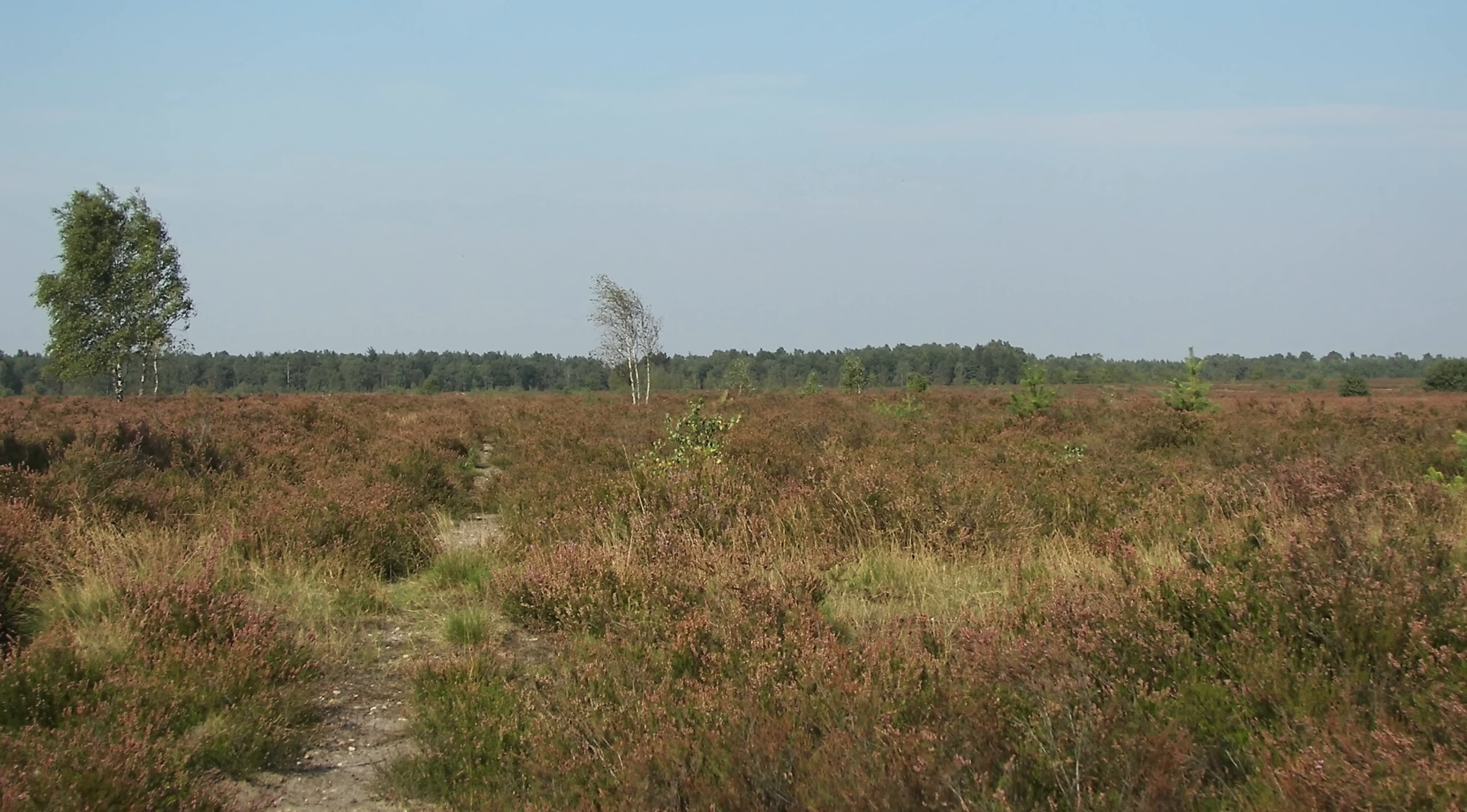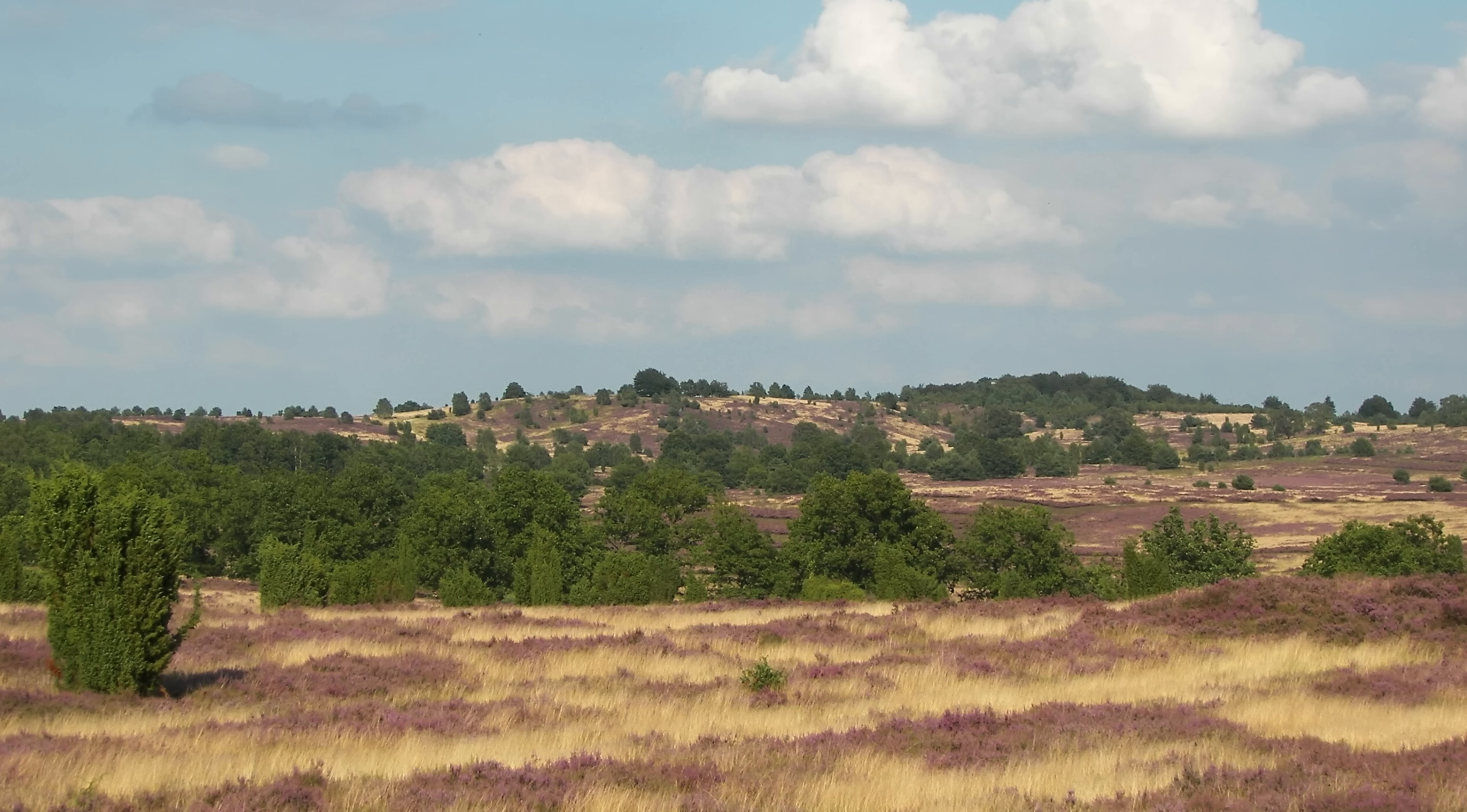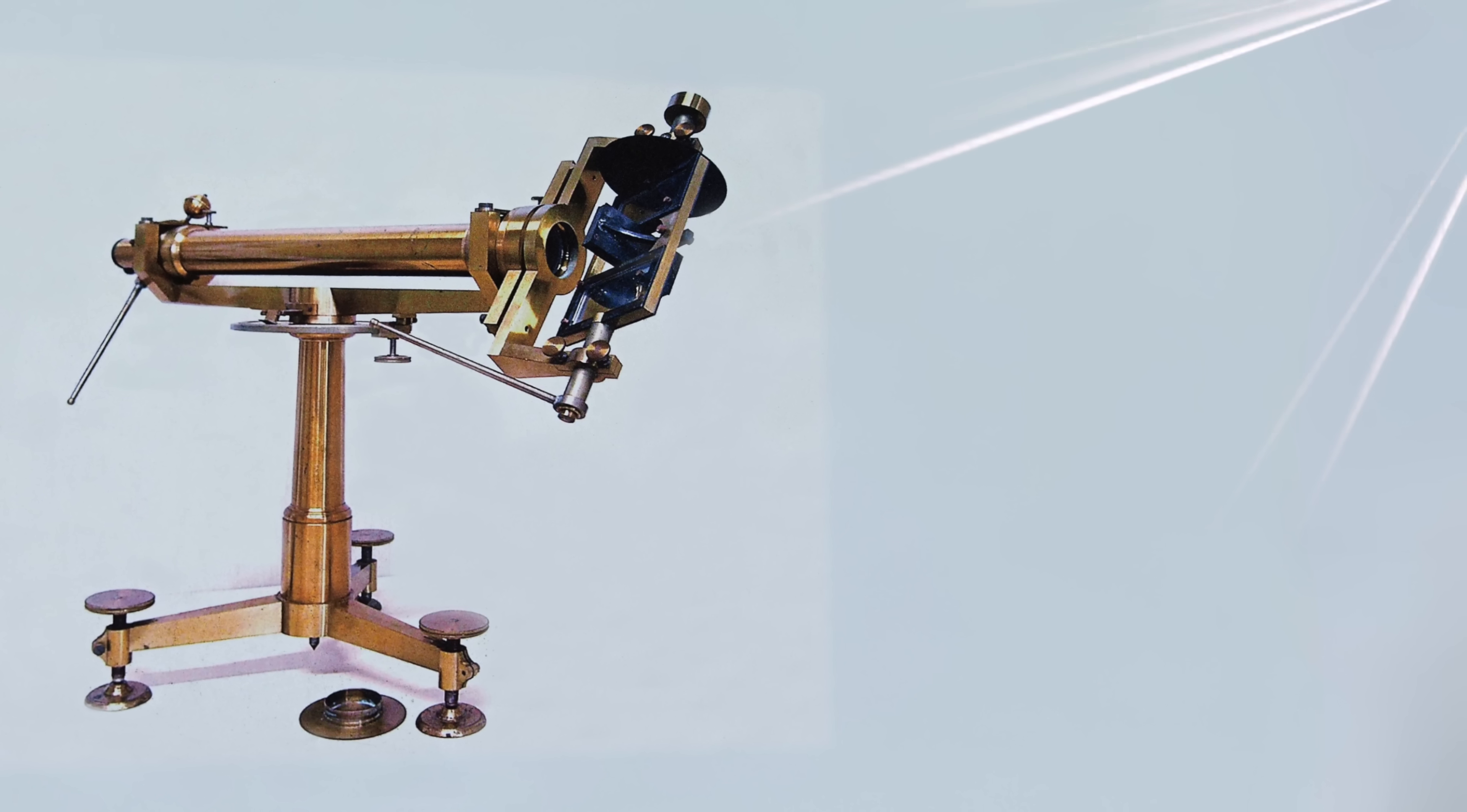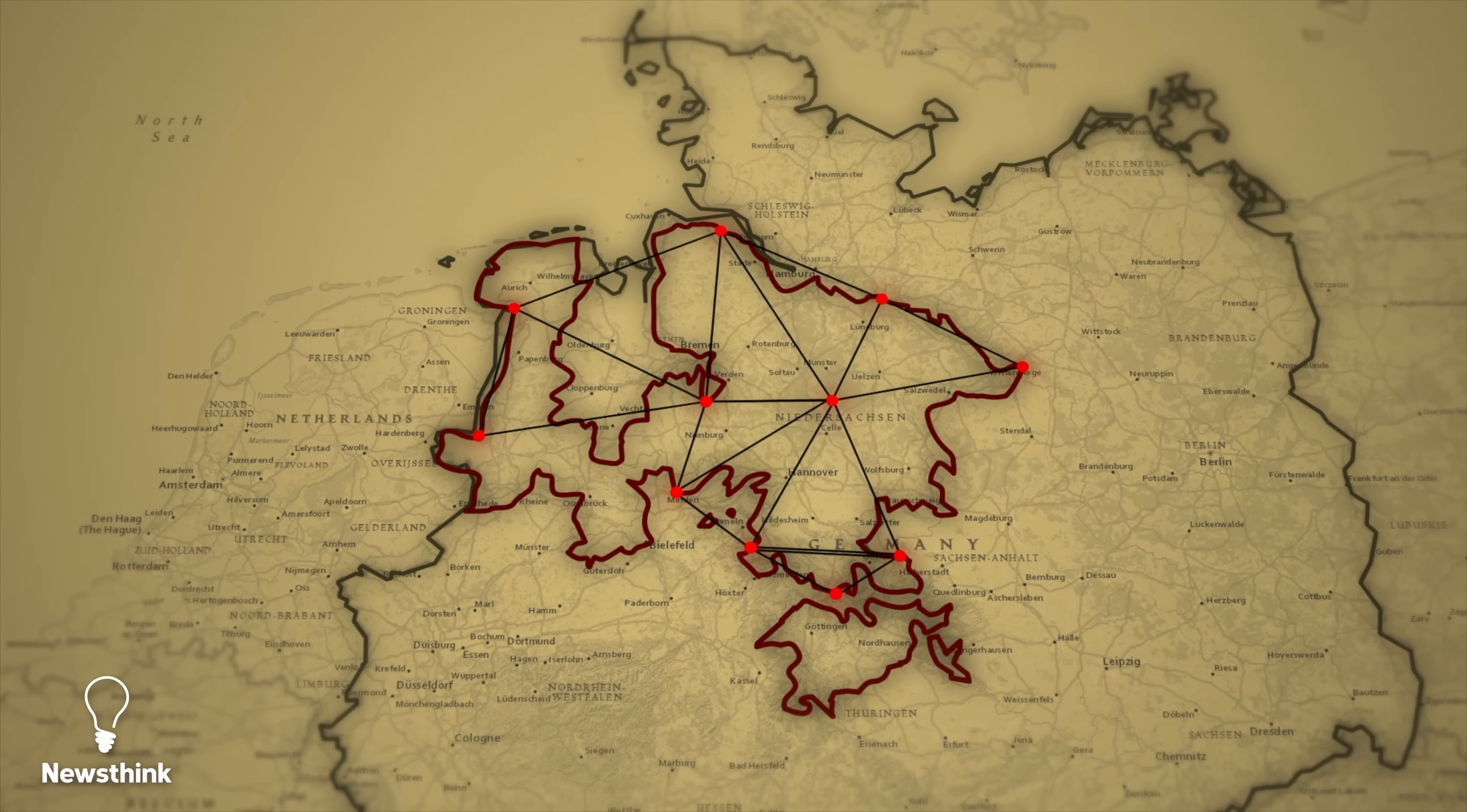The dense vegetation made it difficult to establish clear lines of sight. His team even cut down trees to create visibility between triangulation points. Recognizing the limitations of existing tools, Carl invented the heliotrope, an innovative device that used mirrors to reflect sunlight into a focused beam visible over long distances. By the early 1830s, the survey was nearing completion, allowing him to spend more time at home.